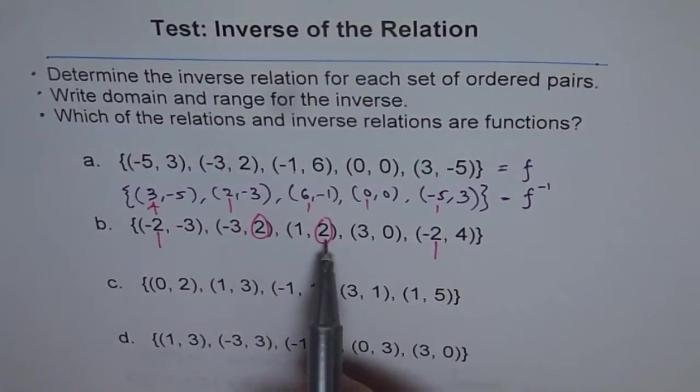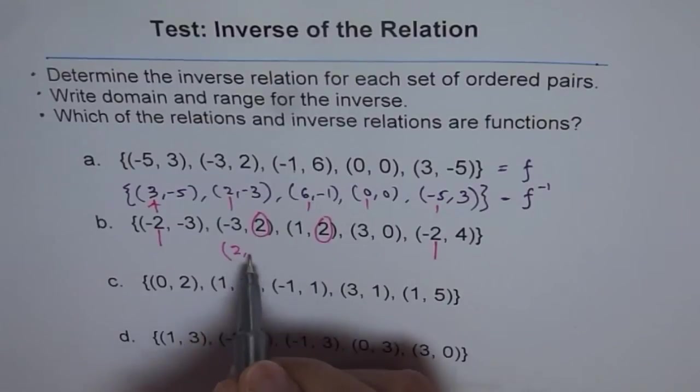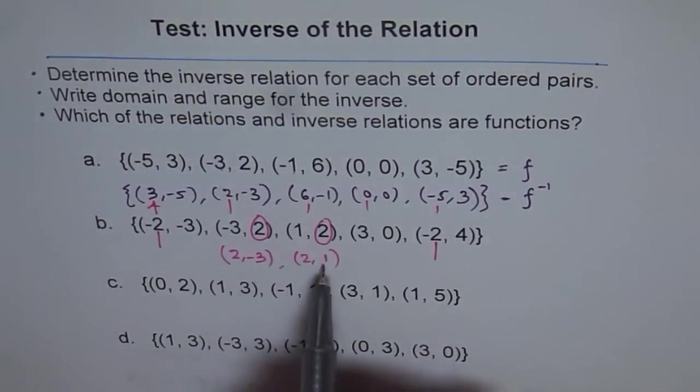So when you write inverse of this, so if I write inverse of this, you get (2, -3). And here, you get 2 and 1. So inverse is not a function.